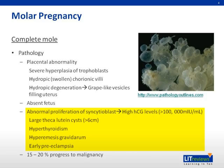HCG has both alpha and beta subunits, and the alpha subunit can be found in LH, FSH, and TSH. Because of this, HCG can act as a homolog to LH and FSH and stimulate development of large theca-lutein cysts. Likewise, it can also act as a homolog to TSH to cause hyperthyroidism. The high HCG levels can also cause hyperemesis gravidarum and early preeclampsia.